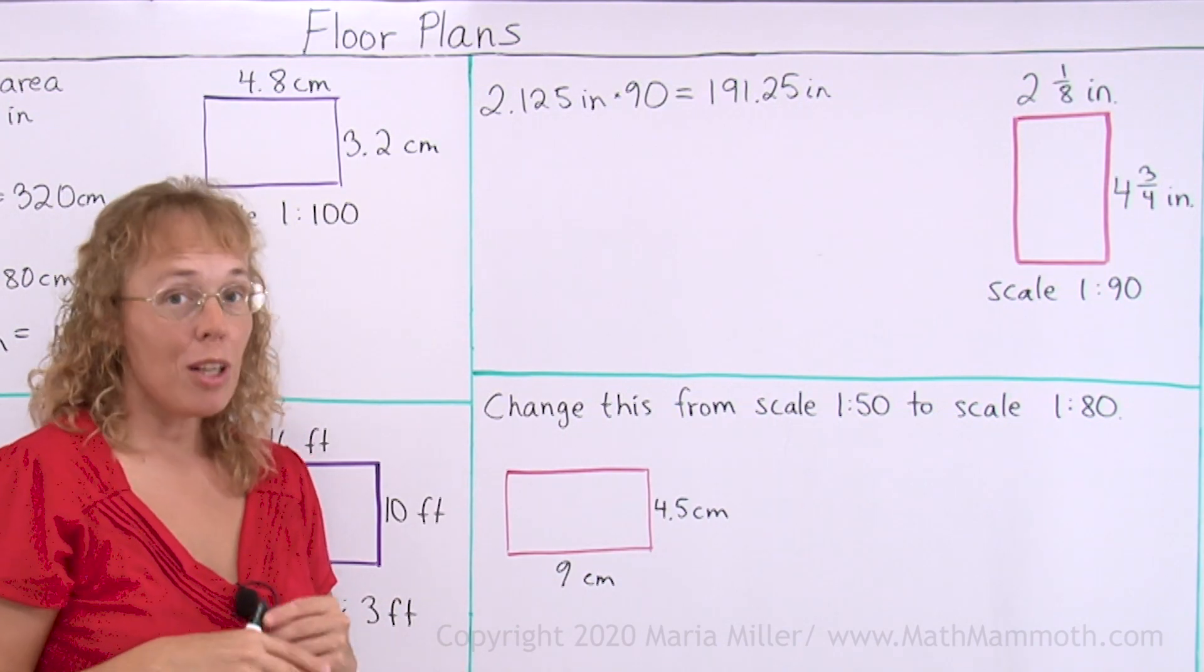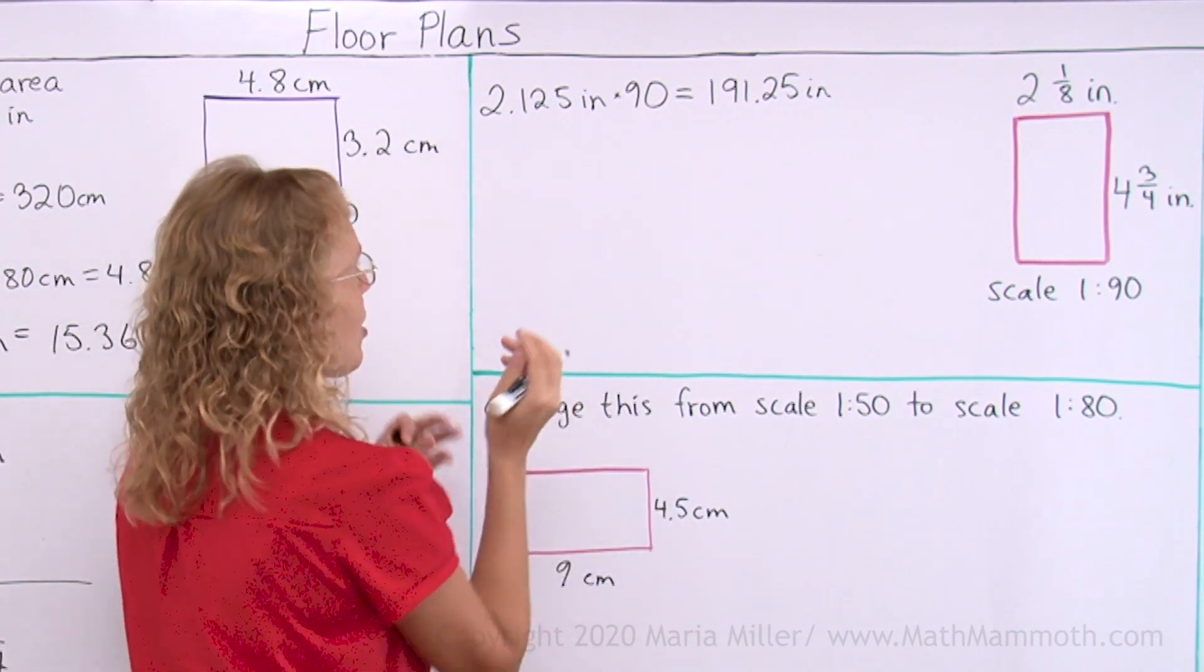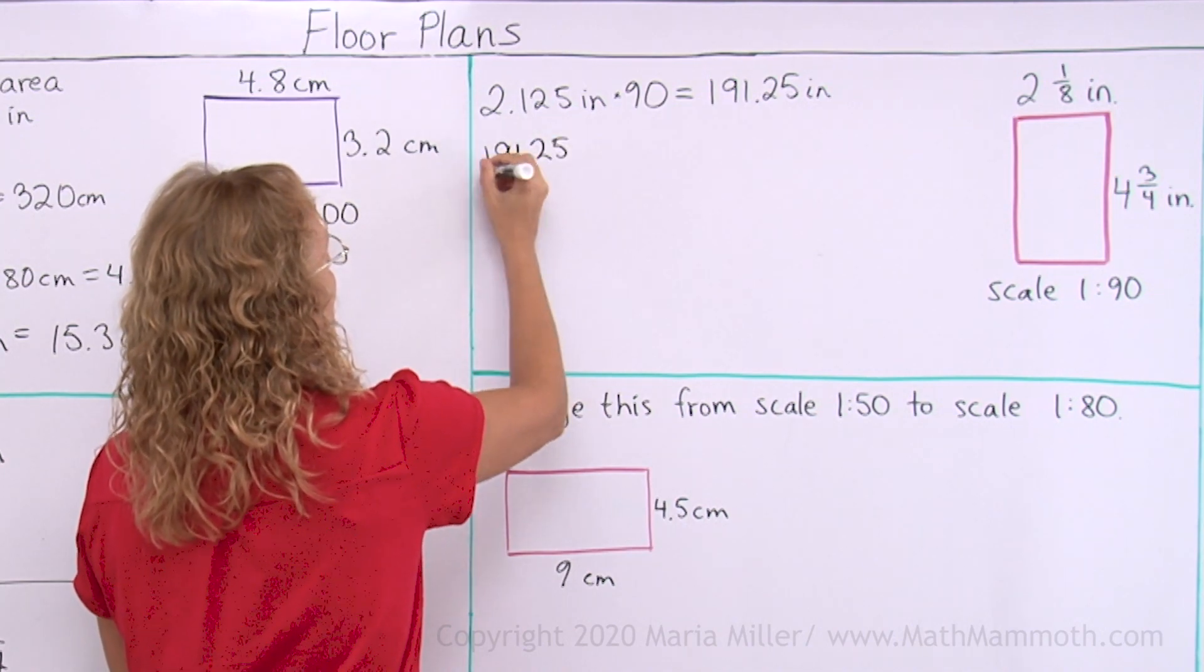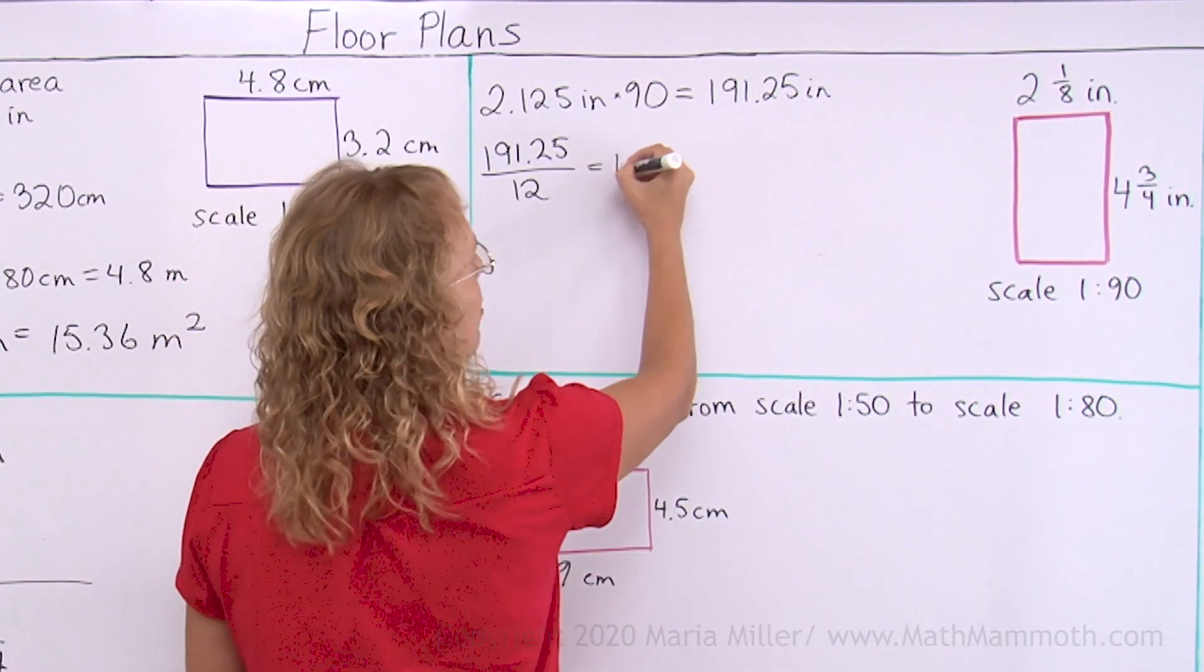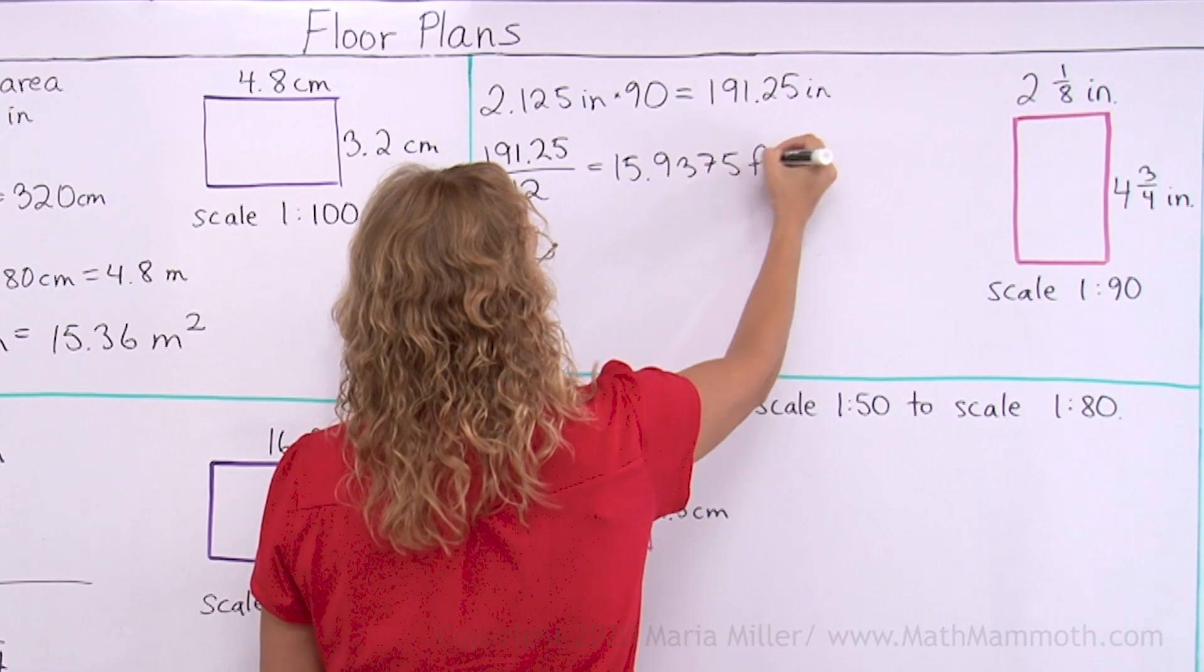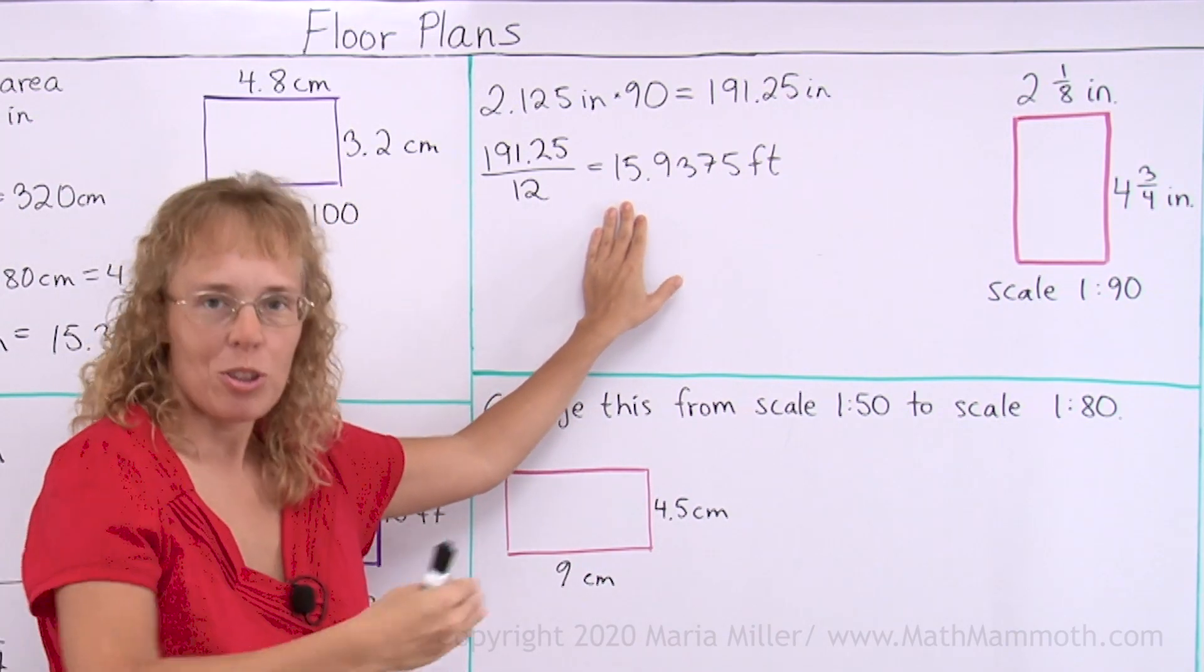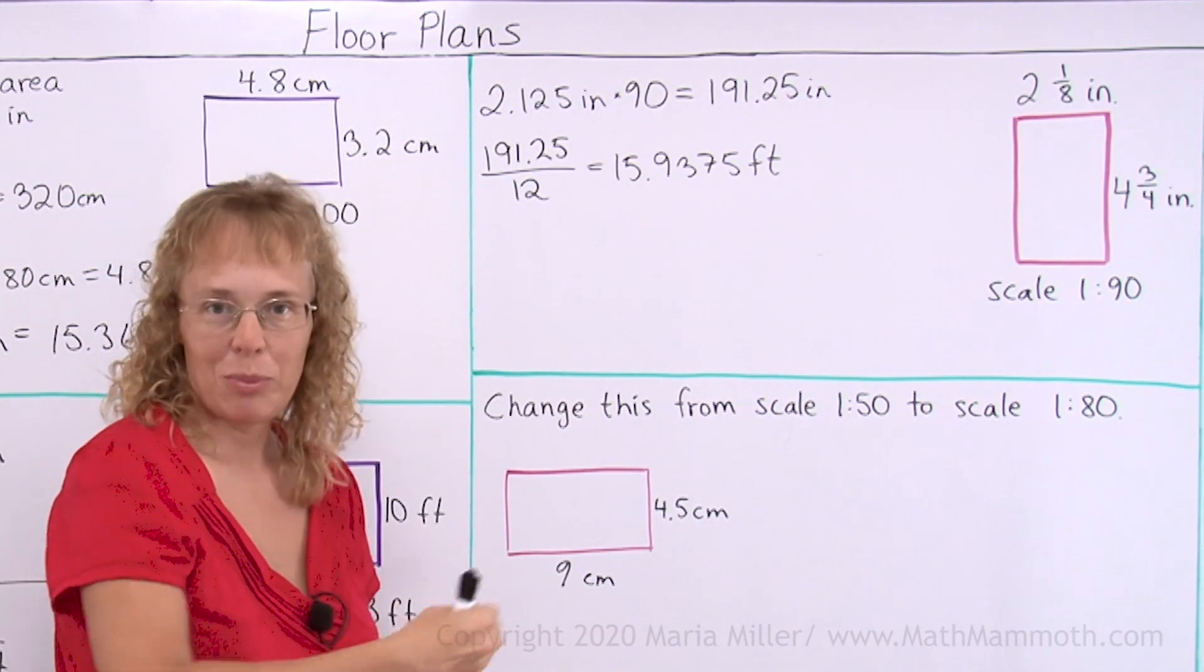However, you probably want to change this into feet. And to do that, since there's 12 inches in 1 foot, you divide this number by 12. And then you will get feet. And this will be 15.9375 feet. And then there's one more thing that you might want to do, which is instead of saying 15 point so many feet, maybe you want to convert it to 15 feet and so many inches.